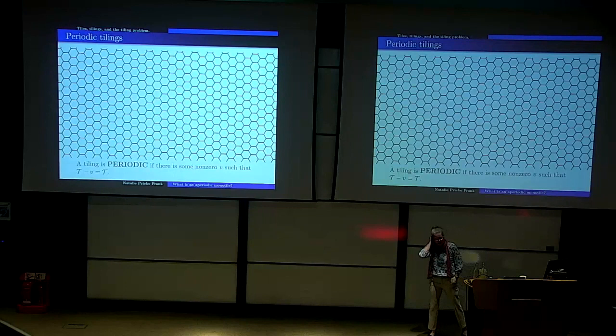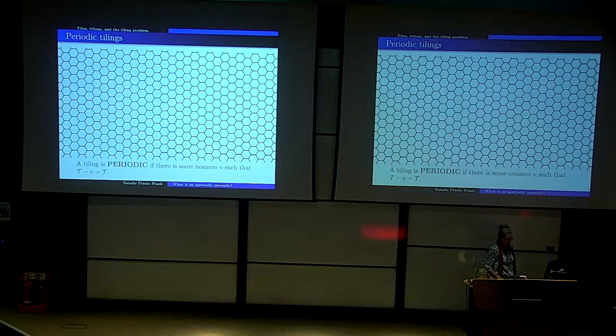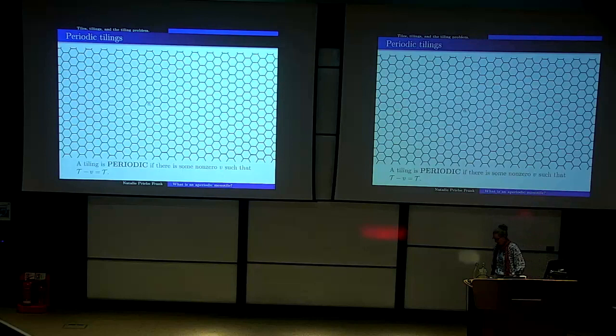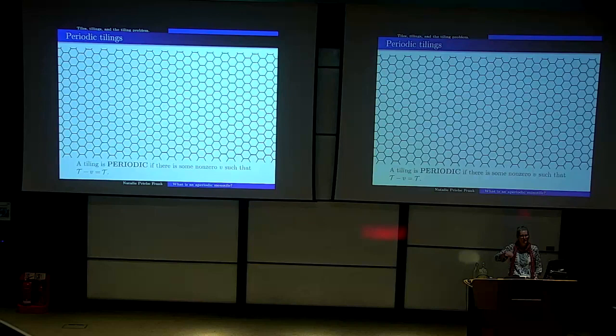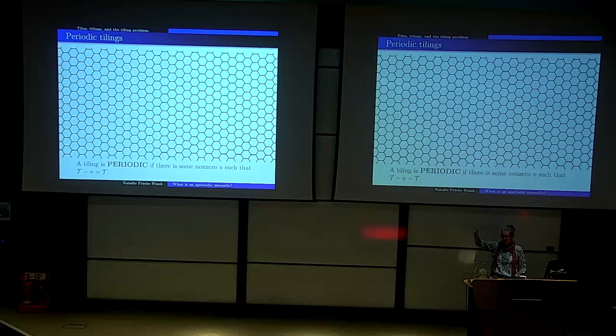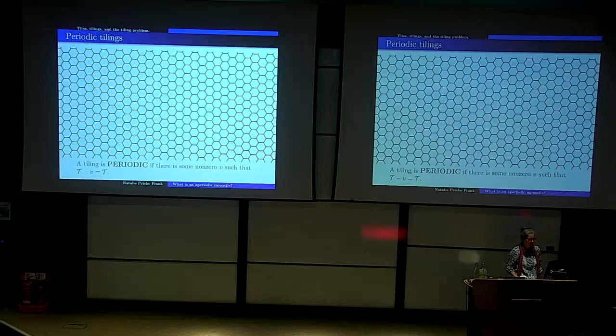I keep saying the word periodic without defining it. A tiling is periodic if there's some vector in the plane where you can slide it by that vector and end up back the way you were. Here's a nice hexagonal periodic tiling. Another thing you know that's periodic is the sine wave — it has period 2π. If you imagine the sine wave made out of wire, you could pick it up, slide it over by 2π, and stick it right back on itself. Same idea.